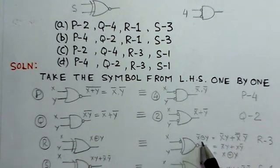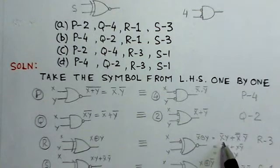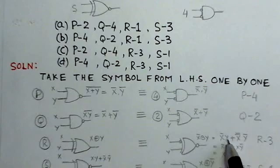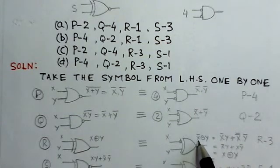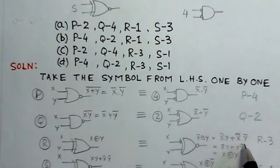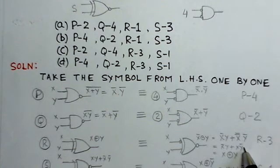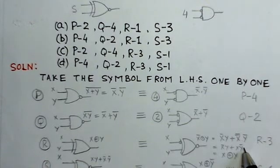If you write here the corresponding SOP expression, this will be X bar Y, and this will be plus X double bar Y bar. Because the expression for exclusive NOR is X Y plus X bar Y bar. So if you simplify this, this gives me the SOP expression for the exclusive OR gate.